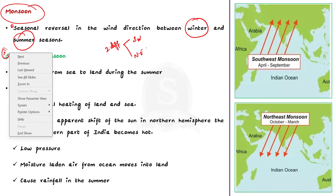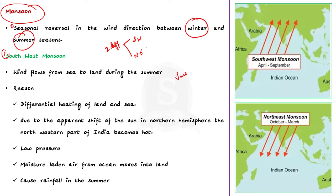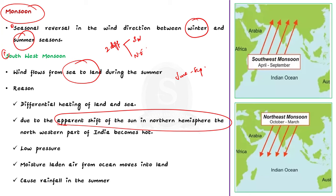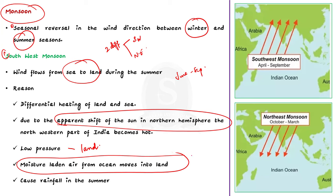The southwest monsoon season falls between June to September. During this season, the wind flows from the sea to land during summer due to the differential heating of land and sea. During summer, the northwestern part of India becomes very hot due to the apparent shift of the sun in the northern hemisphere, creating low pressure over the land. So winds blow from the neighboring ocean towards the land. Since these winds are of maritime origin and blow over warm water bodies before reaching land, they contain moisture, causing ample rainfall in the summer season. This sudden onset of rain is called the break of monsoon or burst of monsoon. About 75% of India's annual rainfall is due to the southwest monsoon.